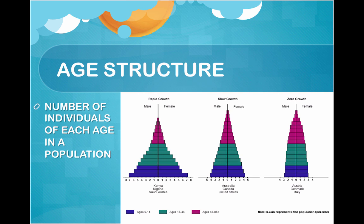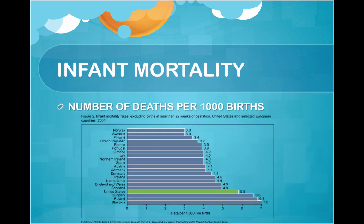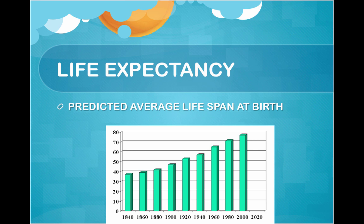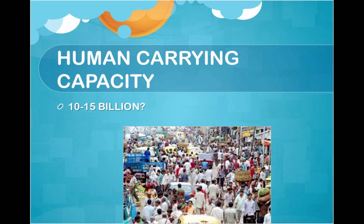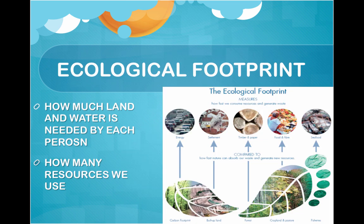Age structure is the number of individuals of each age in a population. Infant mortality is the number of deaths per 1,000 births. Life expectancy predicts the average lifespan at birth. If infant mortality increases, parents will usually have more children. The human carrying capacity of Earth was estimated by Anton von Leeuwenhoek in 1679 at 13.4 billion; the actual estimate is probably between 10 to 15 billion. We can alternatively look at ecological footprints — how much land and water is needed by each person and how many resources each person uses.